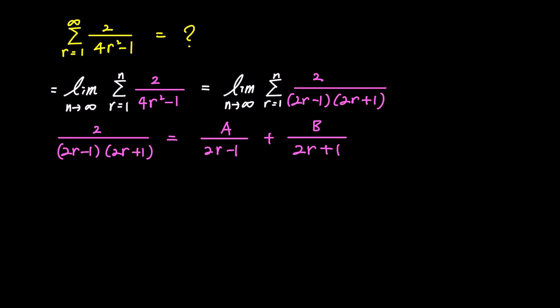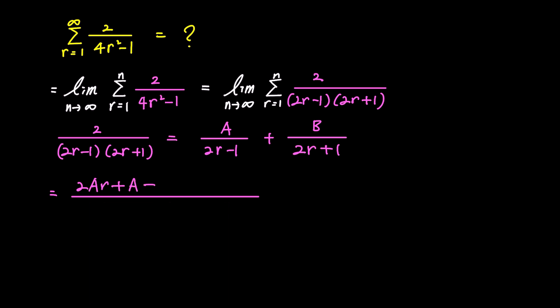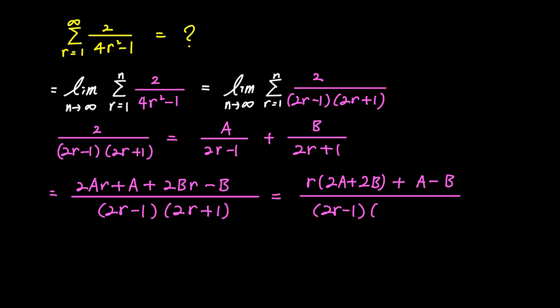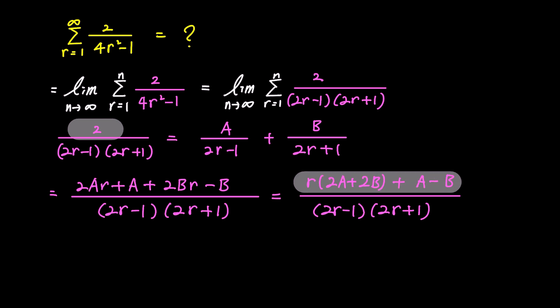To find the constants a and b, we combine the decomposed fractions back into one and compare the resulting numerator with the original numerator, which is 2. The combined numerator is 2ar plus a plus 2br minus b, and the denominator remains 2r minus 1 times 2r plus 1. Writing the numerator as a function of r, we have r times 2a plus 2b, plus a minus b, and this should equal the original numerator, which is 2.